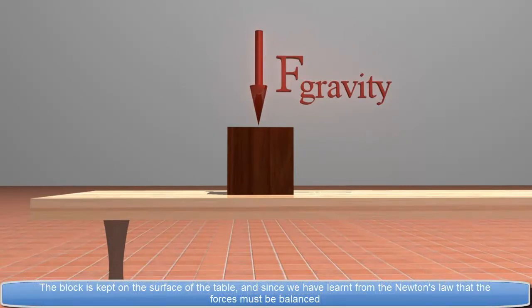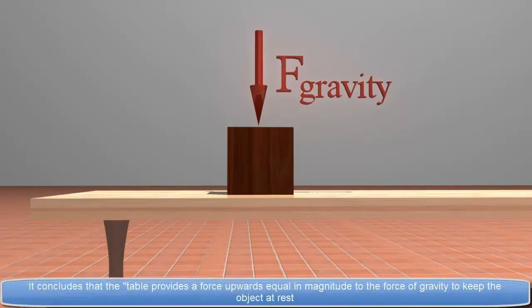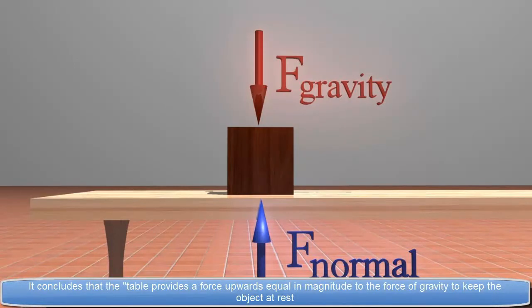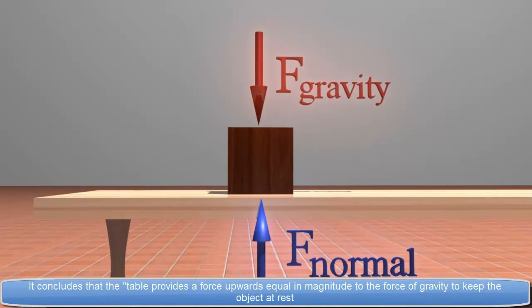And since we have learnt from Newton's law that the forces must be balanced, it concludes that the table provides a force upwards equal in magnitude to the force of gravity to keep the object at rest.